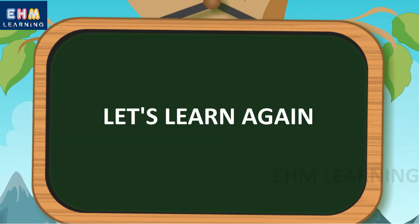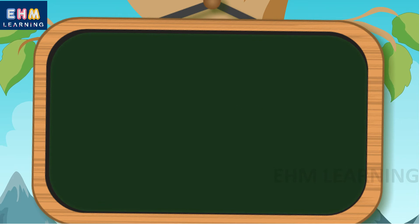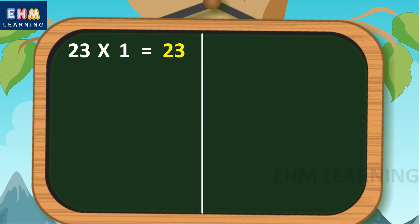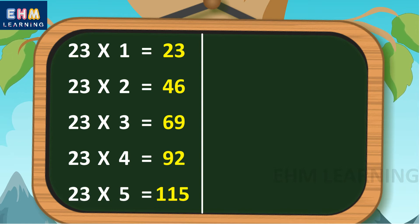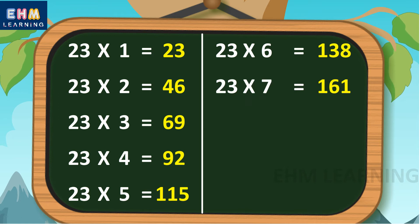Let's learn again. 23 1s are 23, 23 2s are 46, 23 3s are 69, 23 4s are 92, 23 5s are 115, 23 6s are 138, 23 7s are 161.